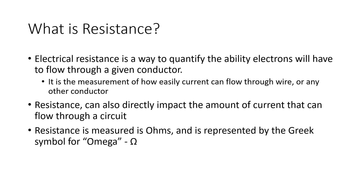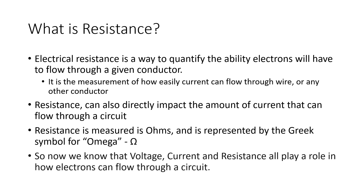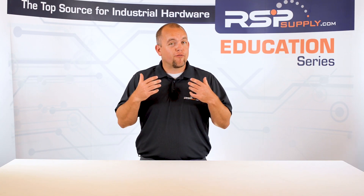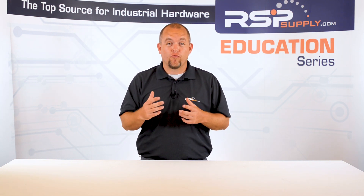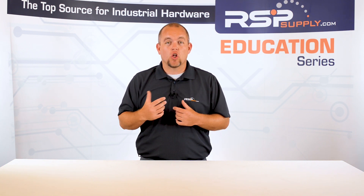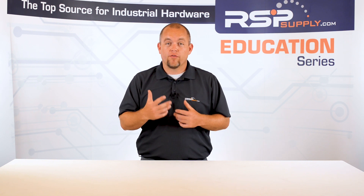Now that we know that voltage, current, and resistance all play a role in how electrons can flow through a circuit, it is how each of these principles are manipulated that will directly impact how electricity behaves so that it will do what we want it to. If we refer back to our analogy in which we represent electricity as water and how it behaves as it flows through a pipe, we can better illustrate how resistance plays a large role in current or the flow of electrons.